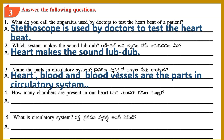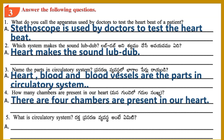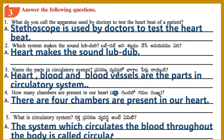Question 4: How many chambers are present in our heart? Answer: There are 4 chambers present in our heart. Question 5: What is the circulatory system? Answer: The system which circulates the blood throughout the body is called the circulatory system.